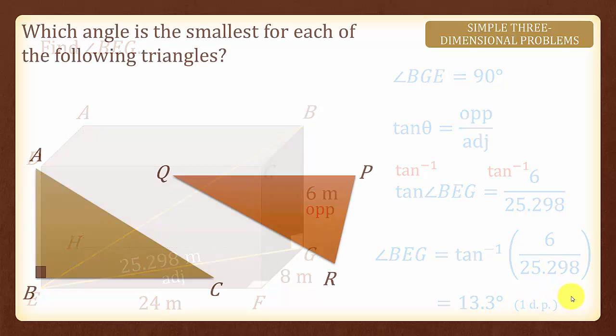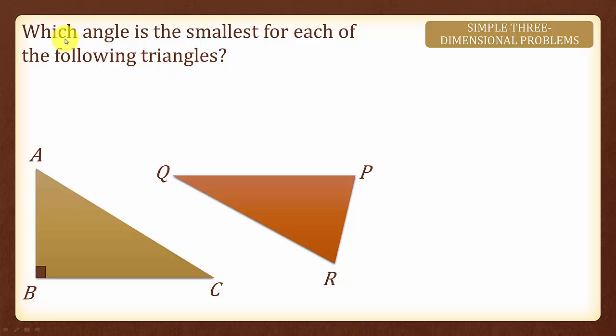Before we look at another example, let us answer this question here. Which angle is the smallest for each of the following triangles? Usually, we can see that angle ACB here is actually the smallest angle. And for the next triangle, angle PQR is actually the smallest angle.